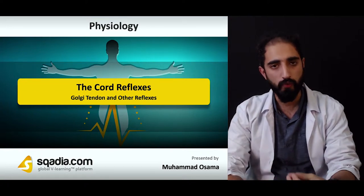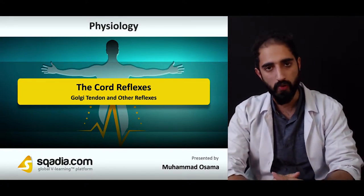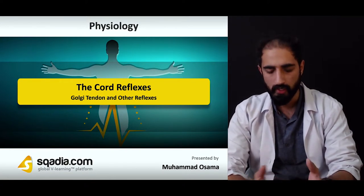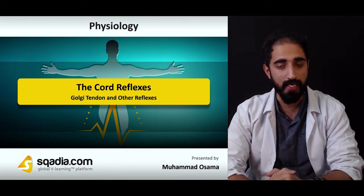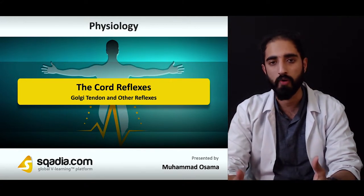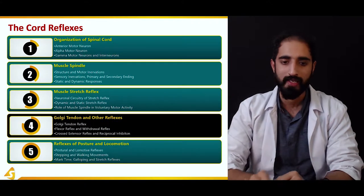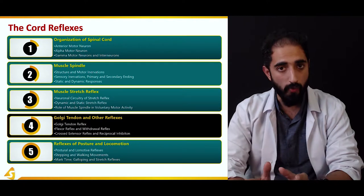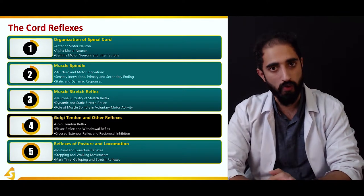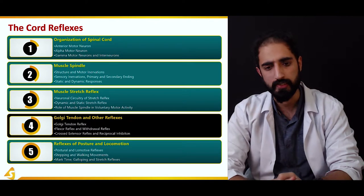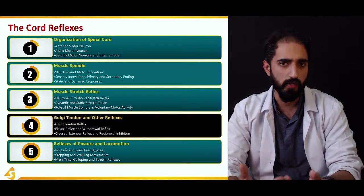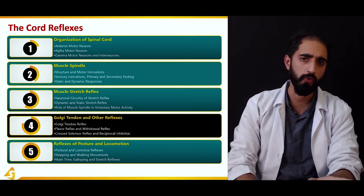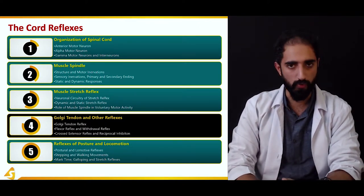Talking about the cord reflexes, another very important type is the Golgi tendon organ reflex, which is associated with muscle tone instead of muscle length. In this lecture, our focus is going to be the Golgi tendon organ: how it works, what reflex it causes, and we're also going to talk about the flexor or withdrawal reflex, the cross extensor reflex, and autogenic and reciprocal inhibition.